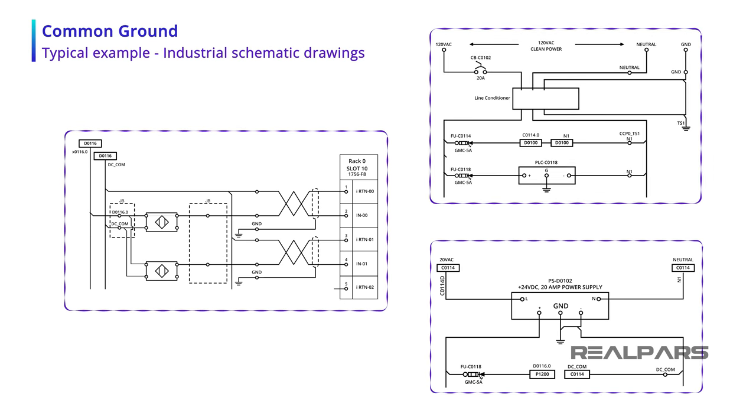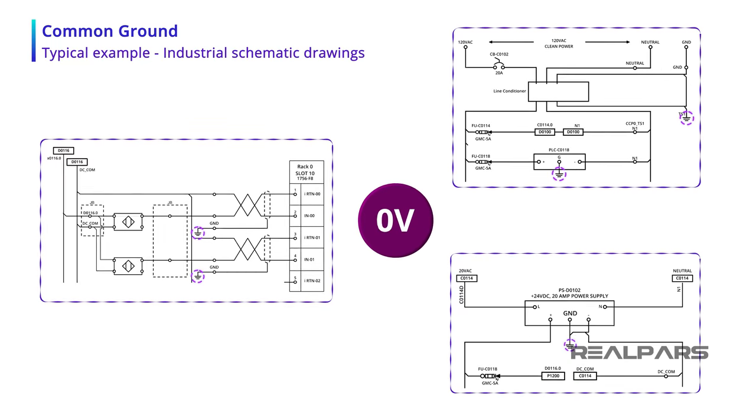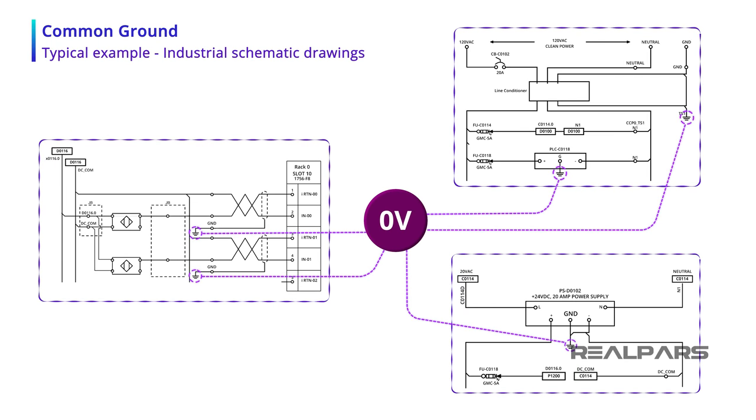In this example of power distribution in a control cabinet, there are several ground symbols. Electrically, this means that all of these points are supposedly at the same voltage potential of 0 volts. From these drawings, we can determine where these grounds are connected physically in the control cabinet.